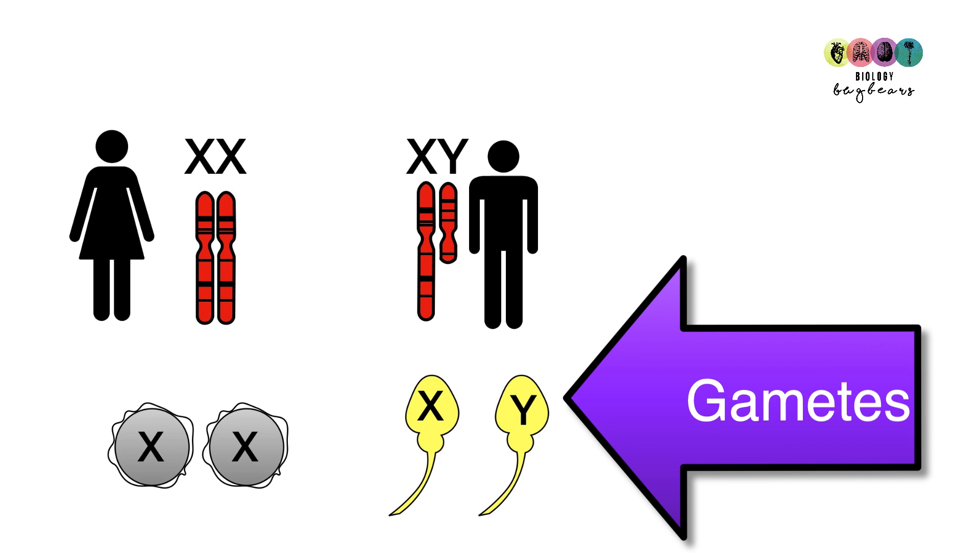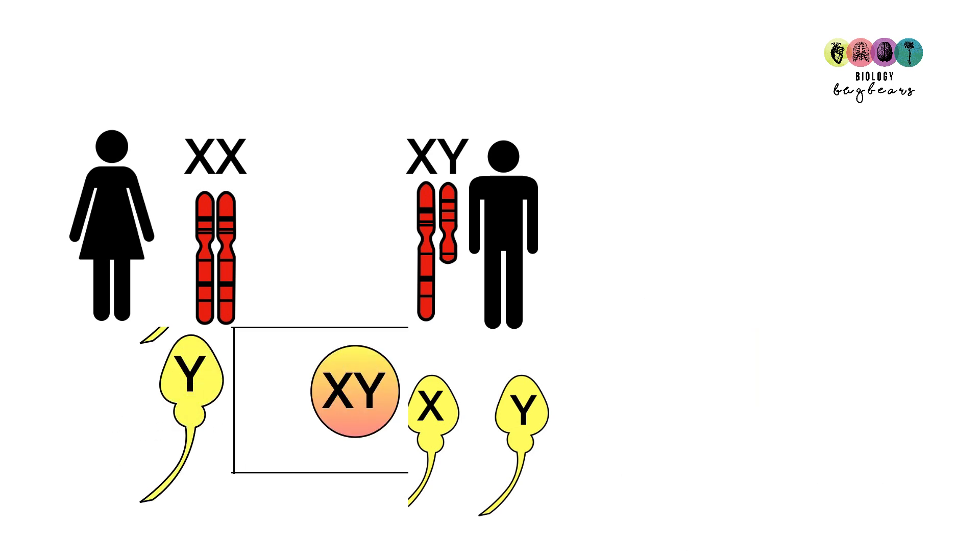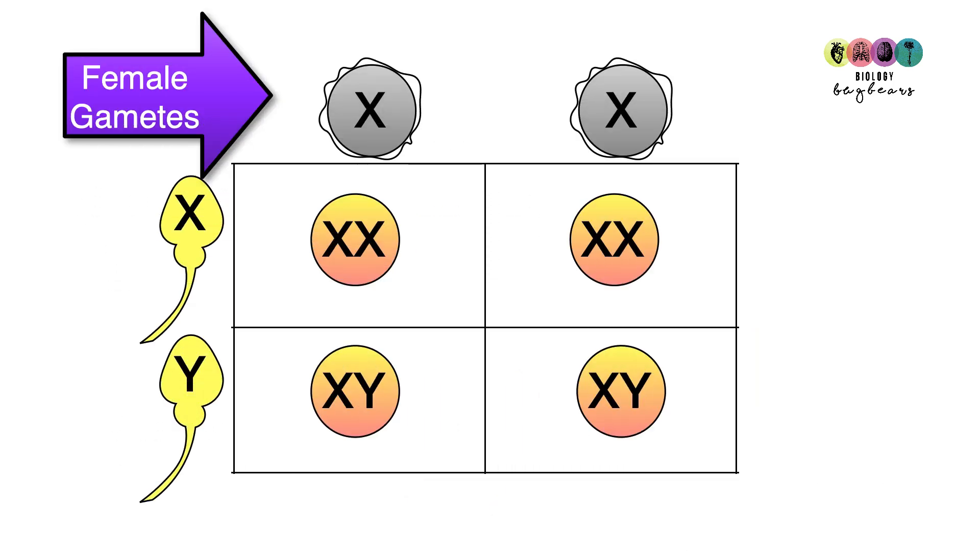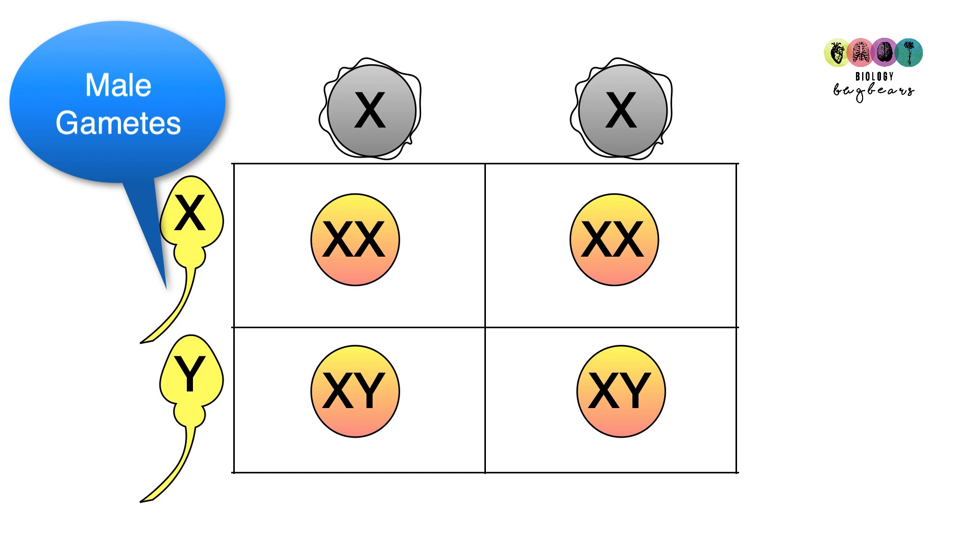Now you do a genetic cross, and you can do this using a Punnett square. So here is the Punnett square with the female gametes along the top and the male gametes along the side. Usually, you don't draw diagrams of eggs and sperm. I just did it to help you understand. So on your exam, just put in the letters. So you're going to combine each of the two gametes on the top with each of the two gametes at the side.